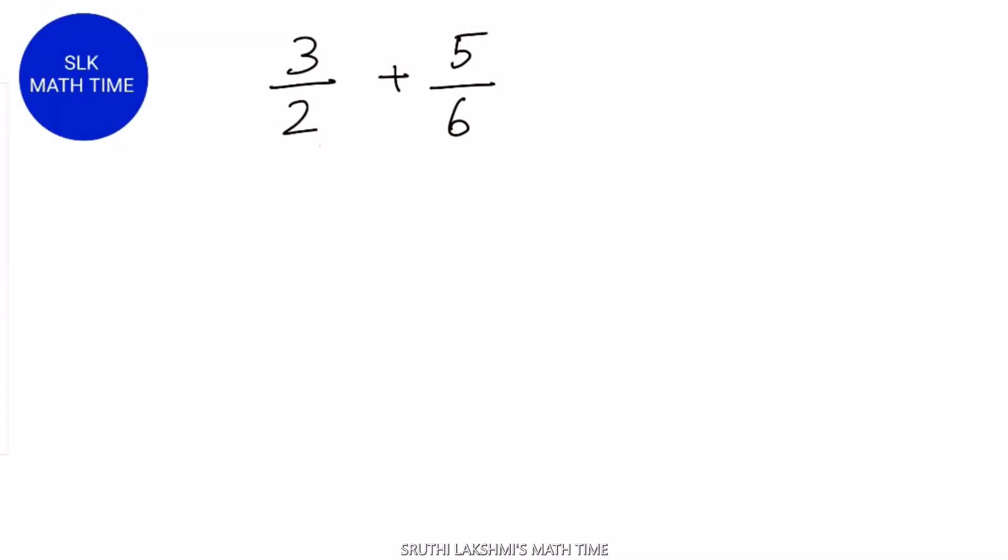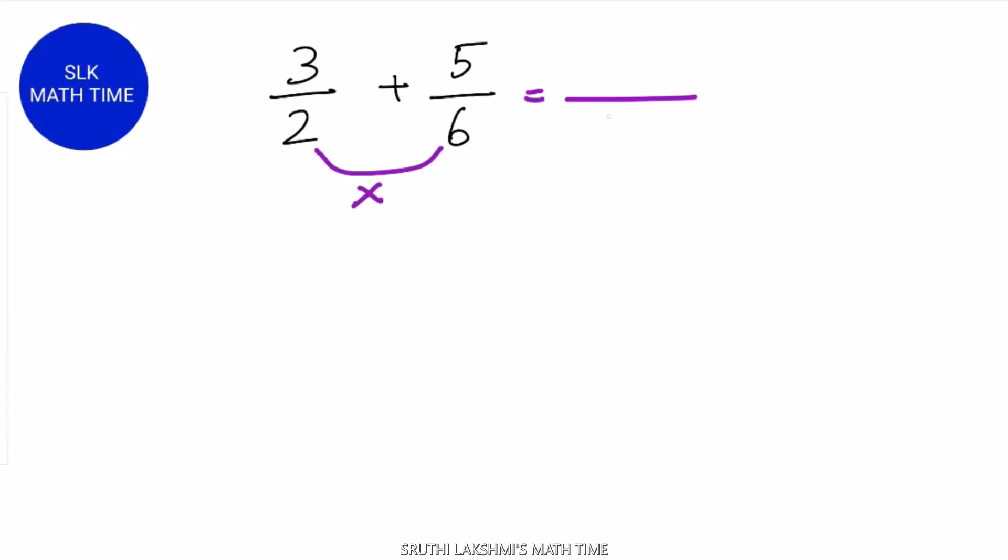Let's see another example: 3 by 2 plus 5 by 6. First, multiply the denominators. 2 into 6 is 12. So the answer's denominator will be 12.